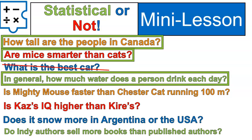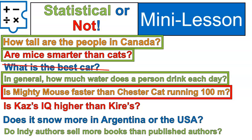Is Mighty Mouse faster than Chester Cat running 100 meters? This one is not a statistical question because you would gather data from those two specific individuals — Mighty Mouse and Chester Cat — and look at those two pieces of data to come to a conclusion immediately. It's not taking an average or gathering variable data; it's just gathering two data points and determining which one is less.